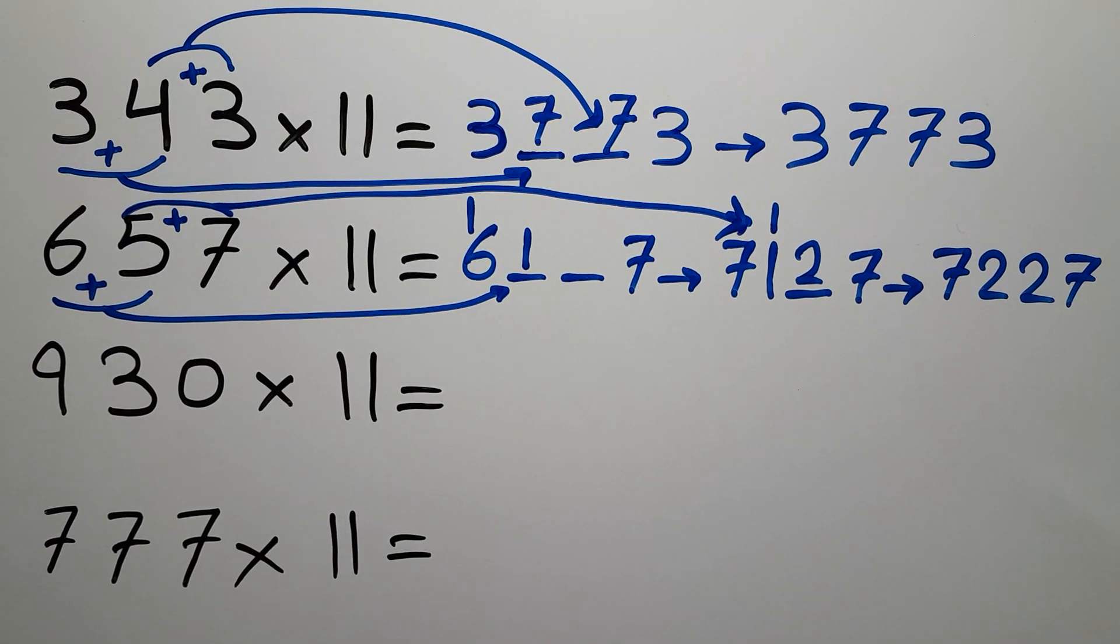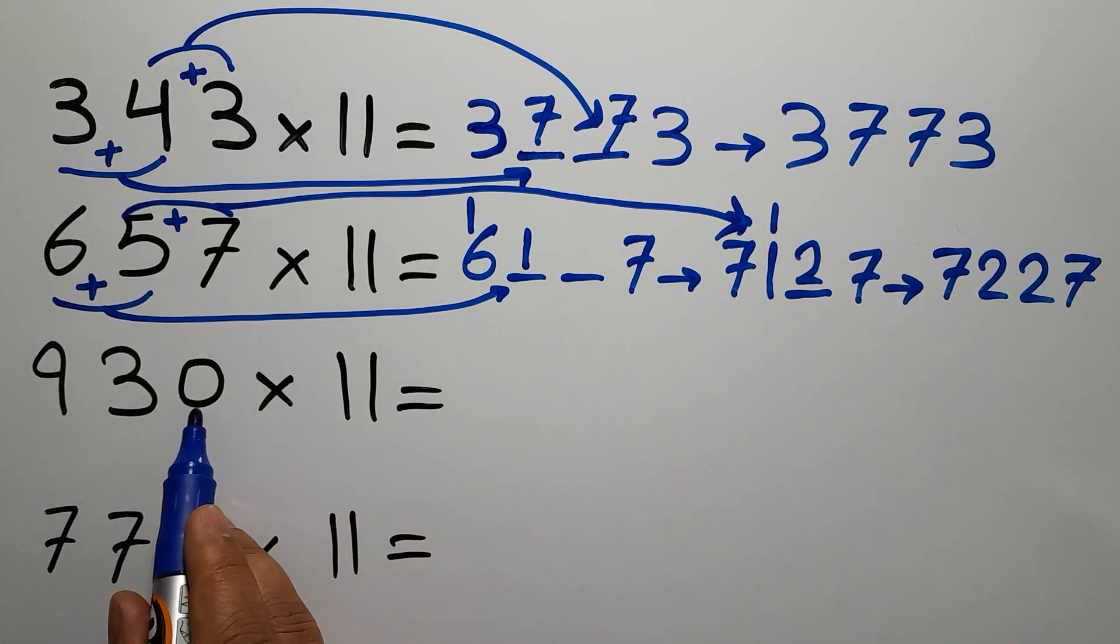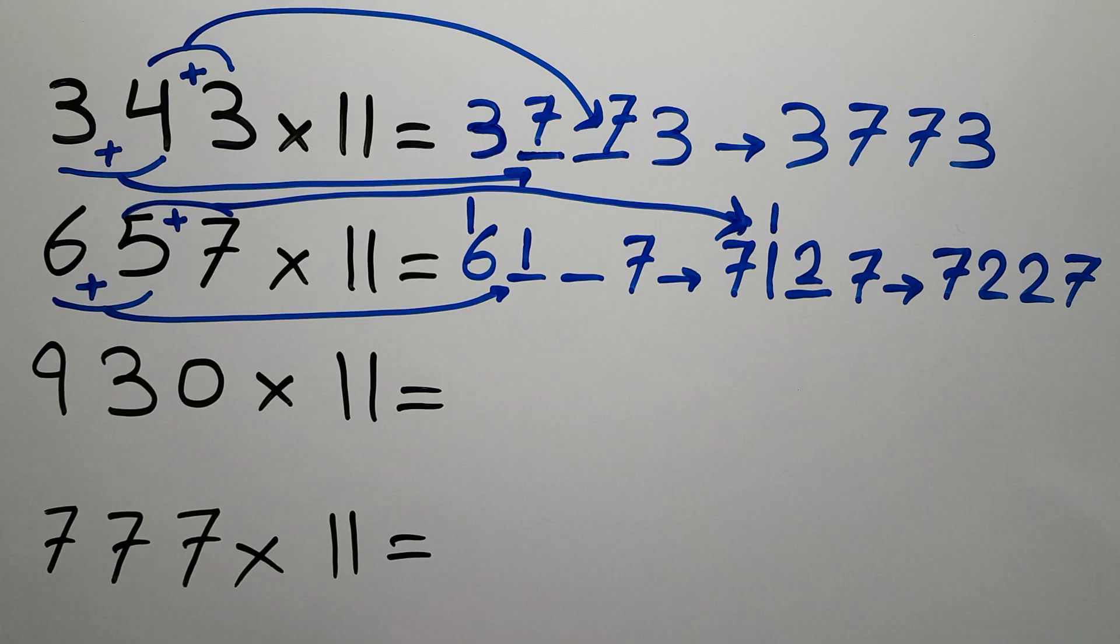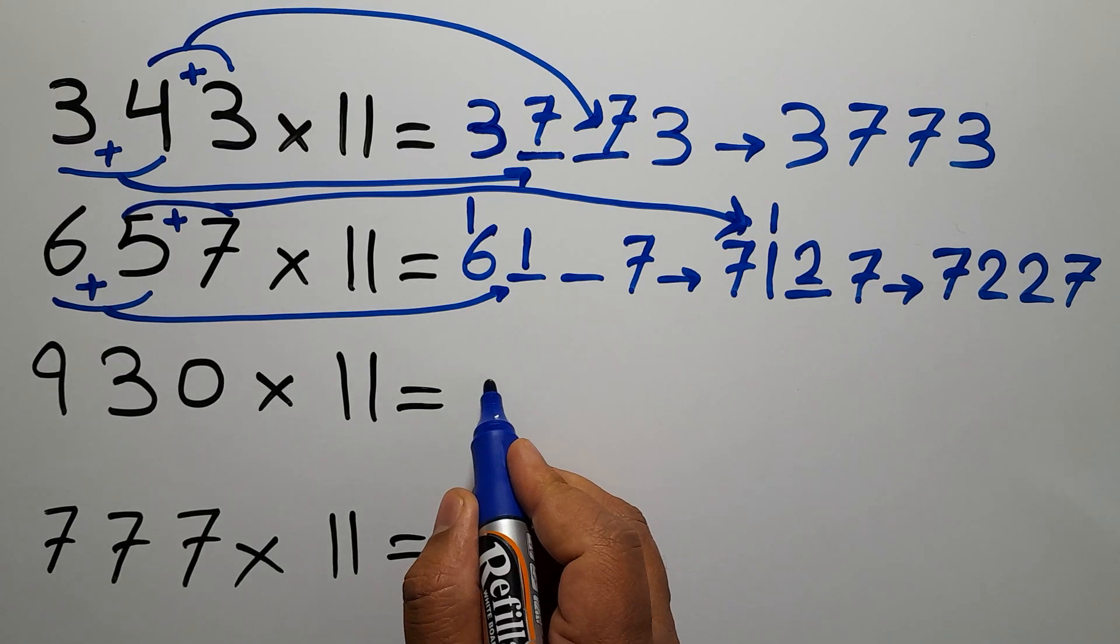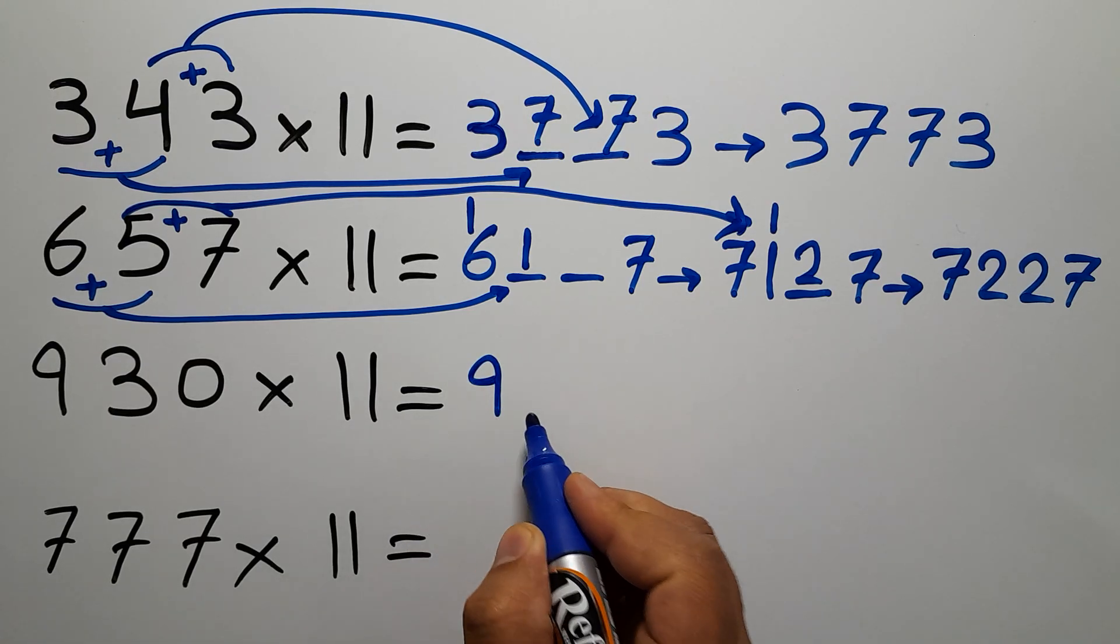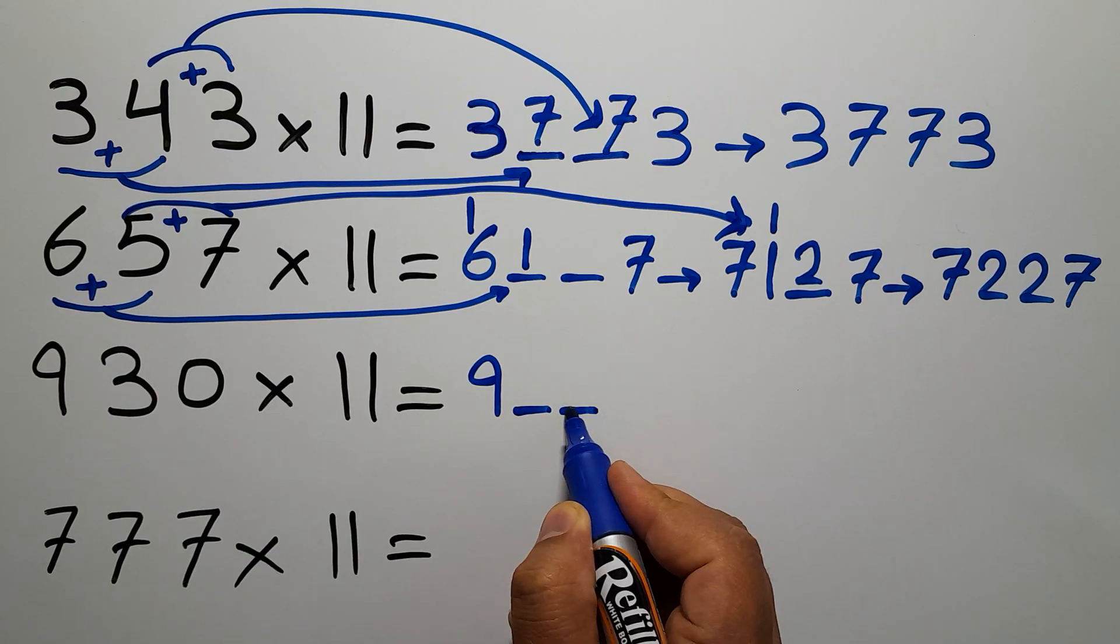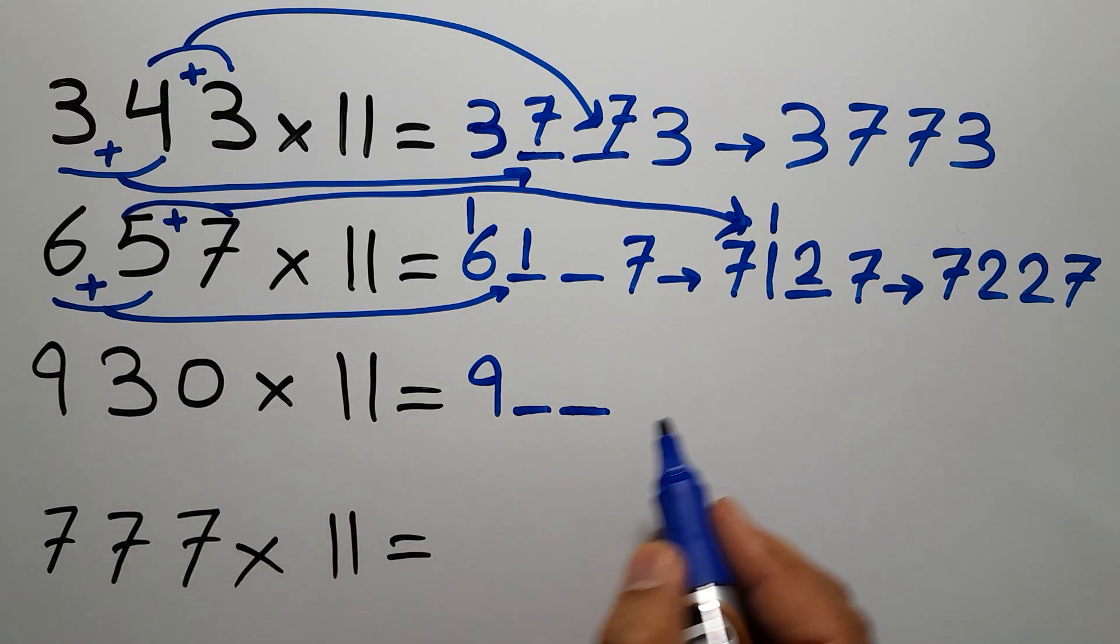Now let's move on to the next multiplication: 930 times 11. So we write 9 and leave 2 blank spaces, then write 0.